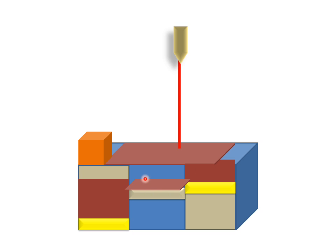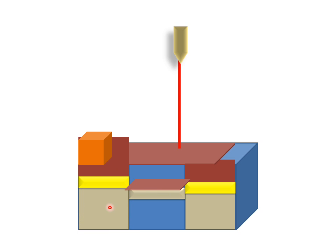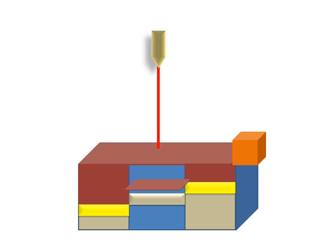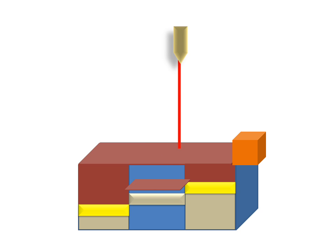This is the first step. Now, the powder on the left side will go up, and the leveler will level the powder. The laser will work and fuse the powder, and a second layer will be created. This process will repeat again and again, and the layers fuse together one over the other to build up the object.